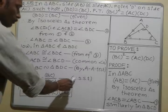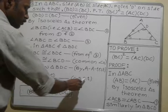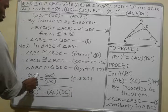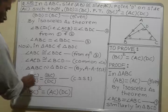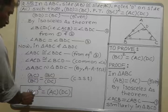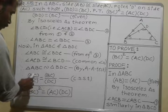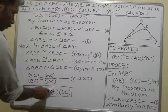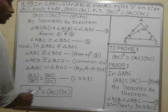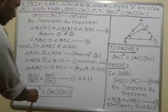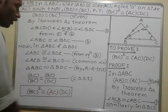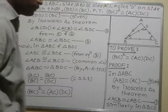This proportion holds because of the corresponding sides of similar triangles. By cross multiplication, BC into BC equals AC into DC, that is BC squared is equal to AC into DC. This is our result — hence proved.